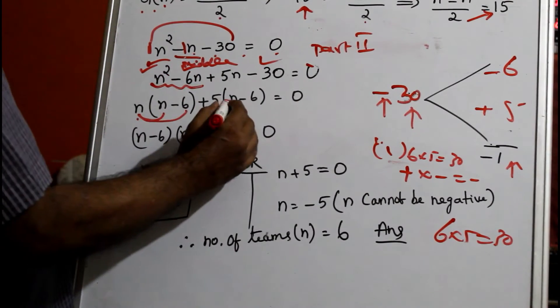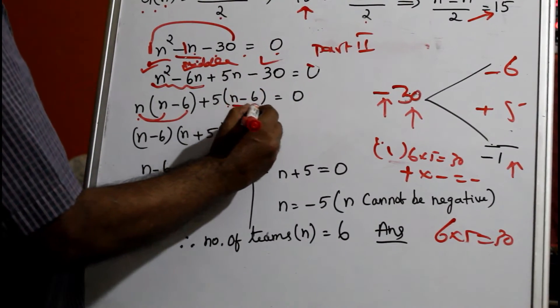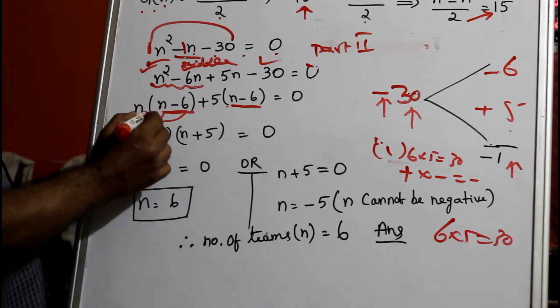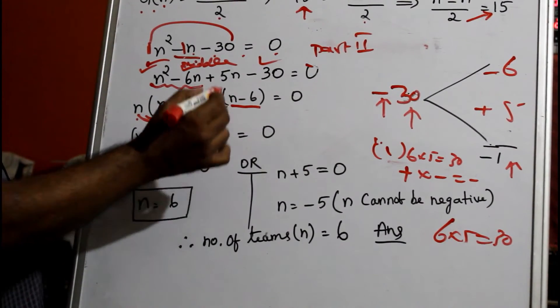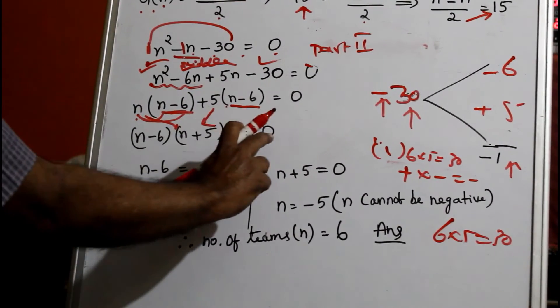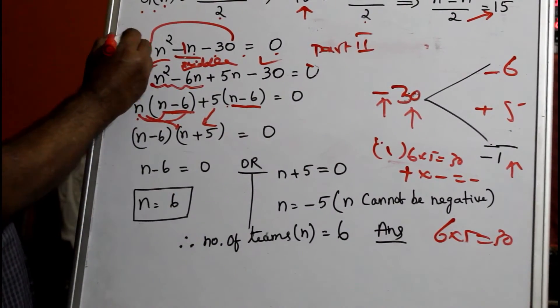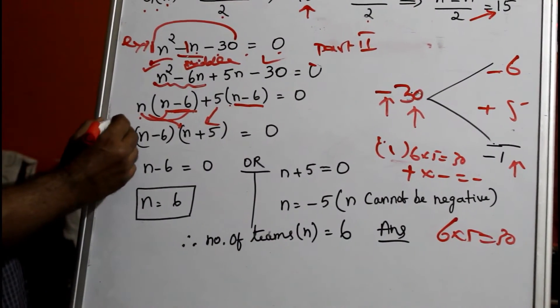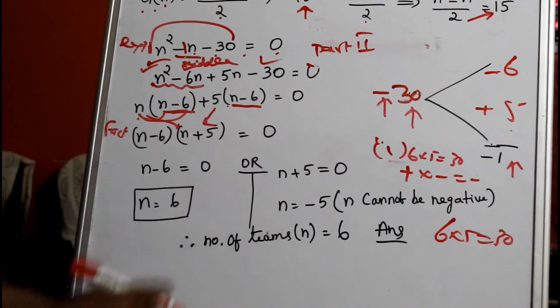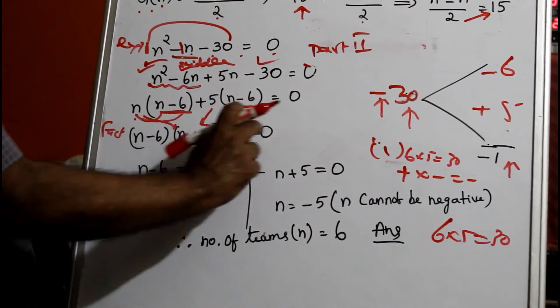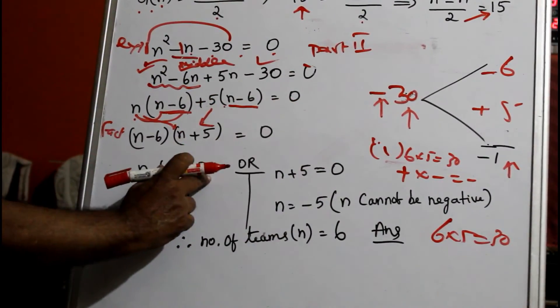+5 is common again, you get (n - 6). So this (n - 6) factor is common. Take (n - 6), then you get n and 5. So (n - 6)(n + 5) = 0. This is called an expression; this is the factorized form. When two numbers multiply to zero, either this should be zero or this should be zero.